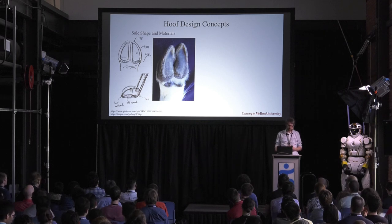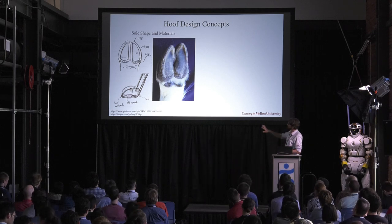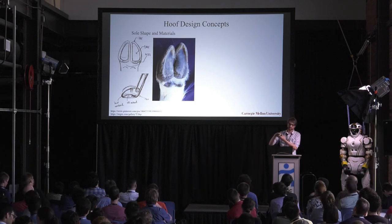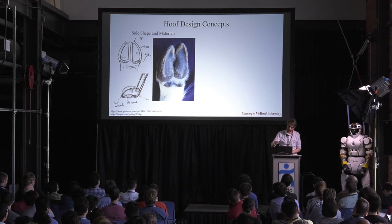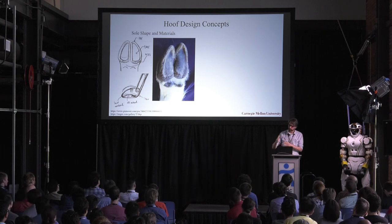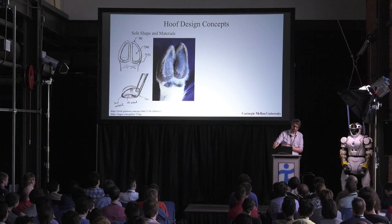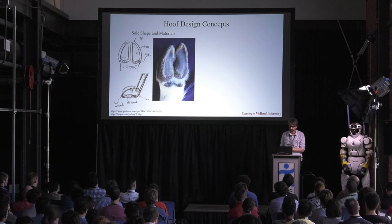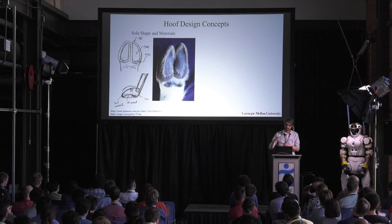Today I'll focus on two main foot design principles. The first is the sole: its shape and materials. Goats have a hard outer shell with a soft, concave pad. That concavity lets it grab onto bumps. If you have a convex sole, you're always tangent to what you're touching and reliant on friction. Instead, we'd like to grasp the rock and rely on normal force rather than tangential forces.